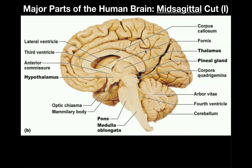Remember what the mid-sagittal cut is: we're taking the brain — in this case a human brain — and literally cutting it into equal left and right halves. The view we're looking at is of the right hemisphere of the brain. When we talk about the left and right halves, we generally call them hemispheres. So this is the right hemisphere of the brain.